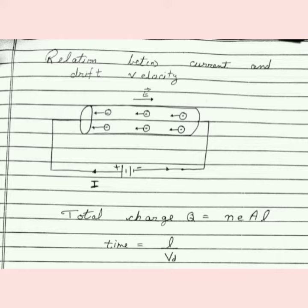To derive the relation between current and drift velocity, we will first find current. The current formula is charge upon time. So first we will find charge, then we will find time, and then we will substitute into the current formula.